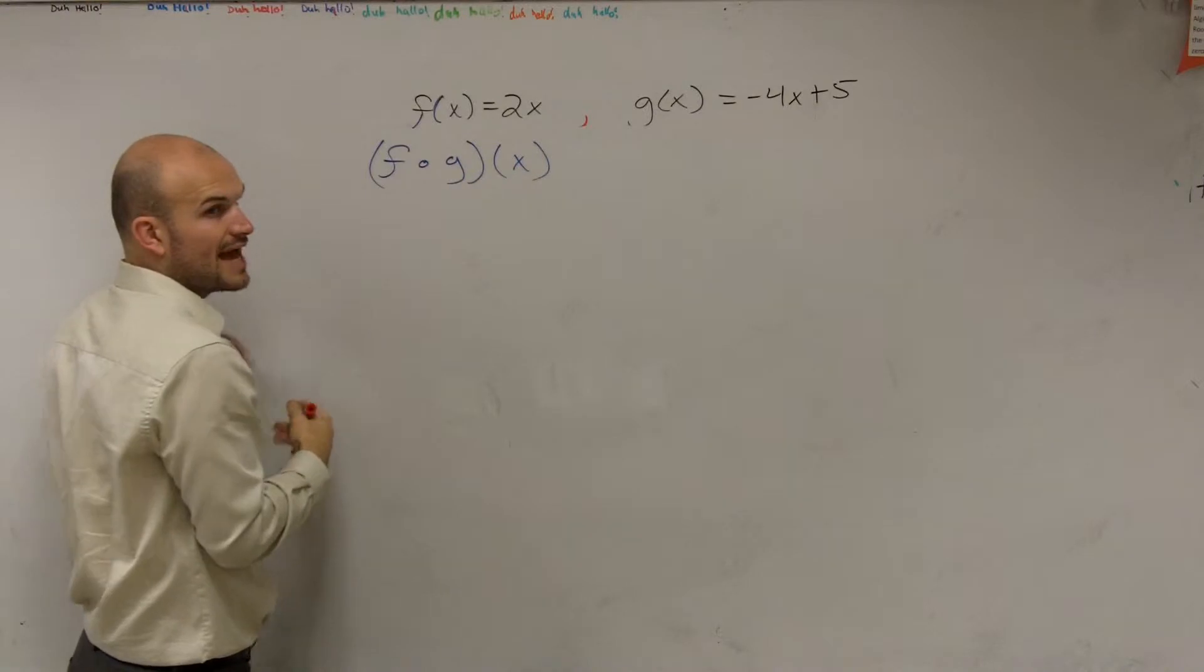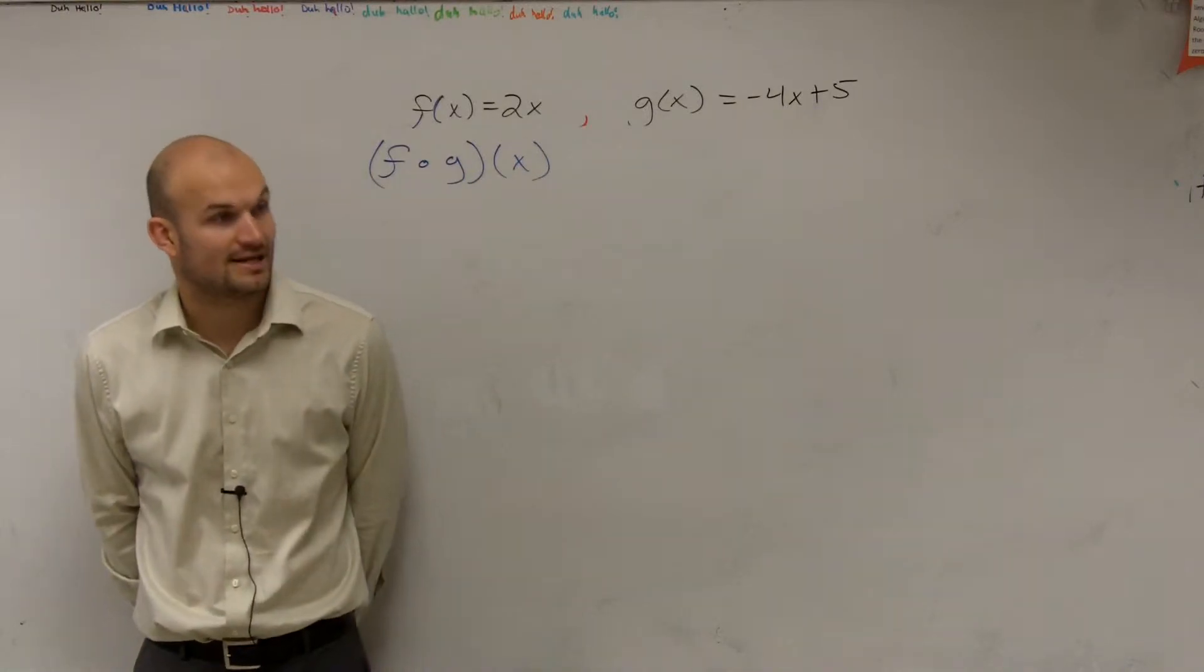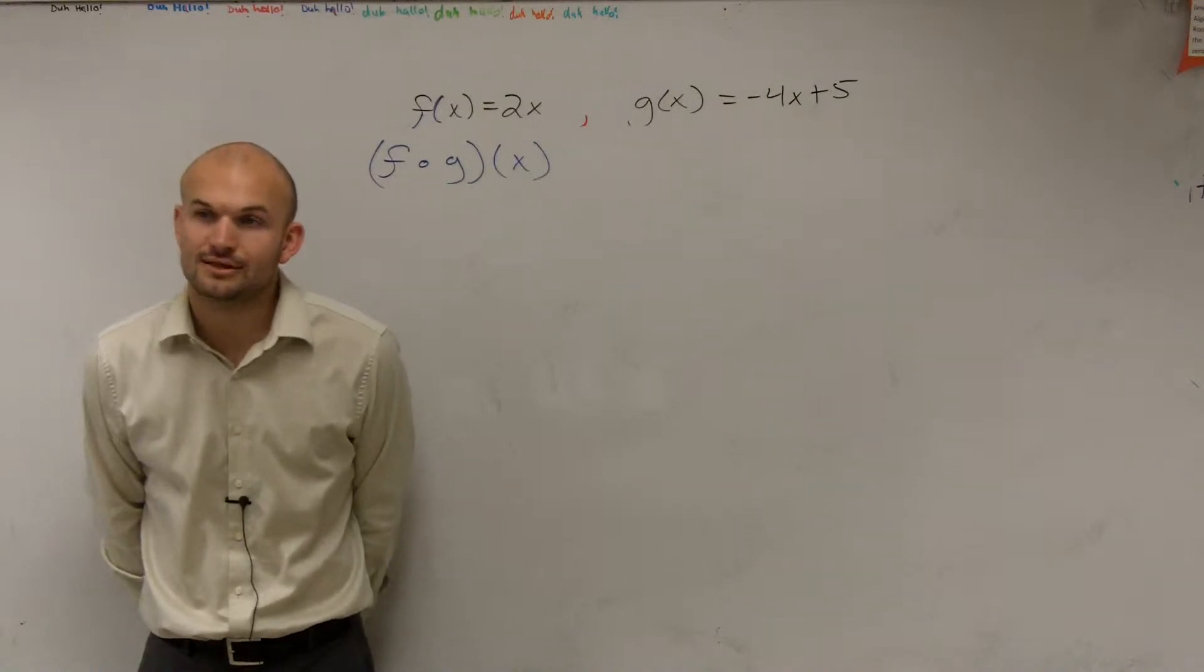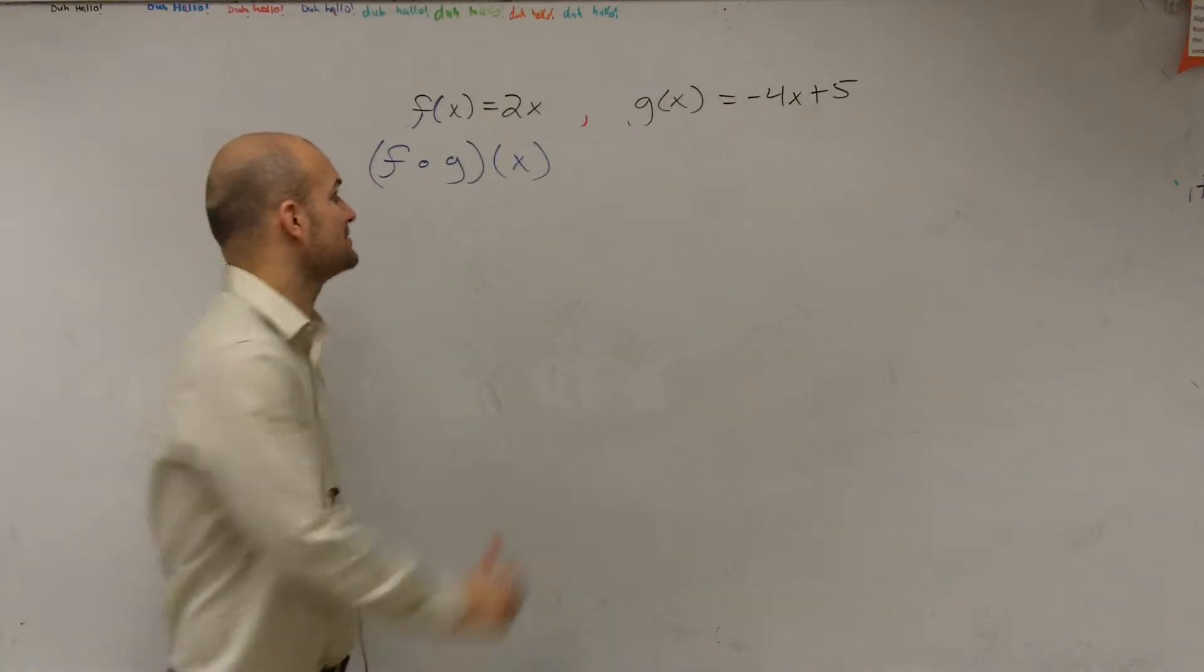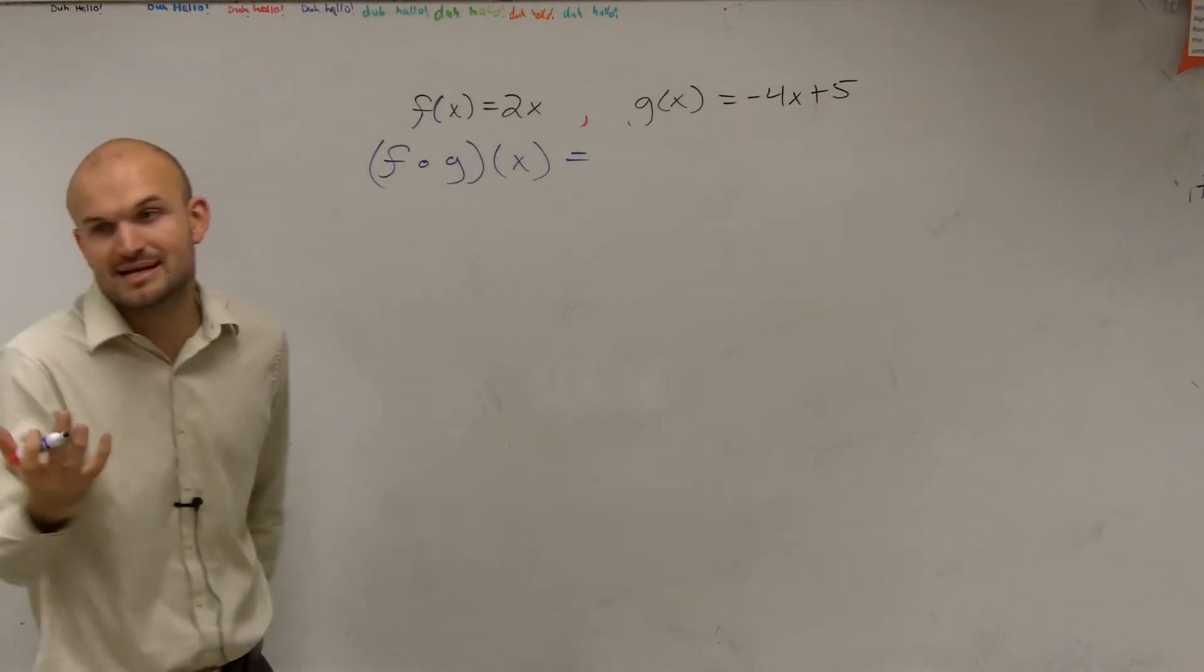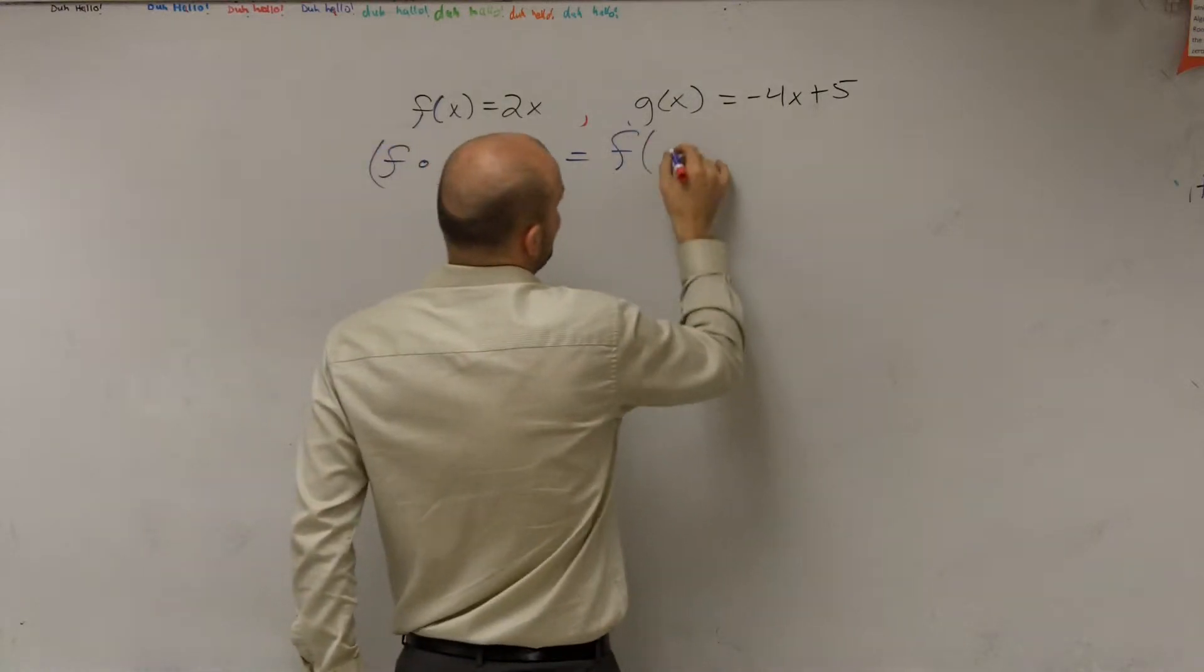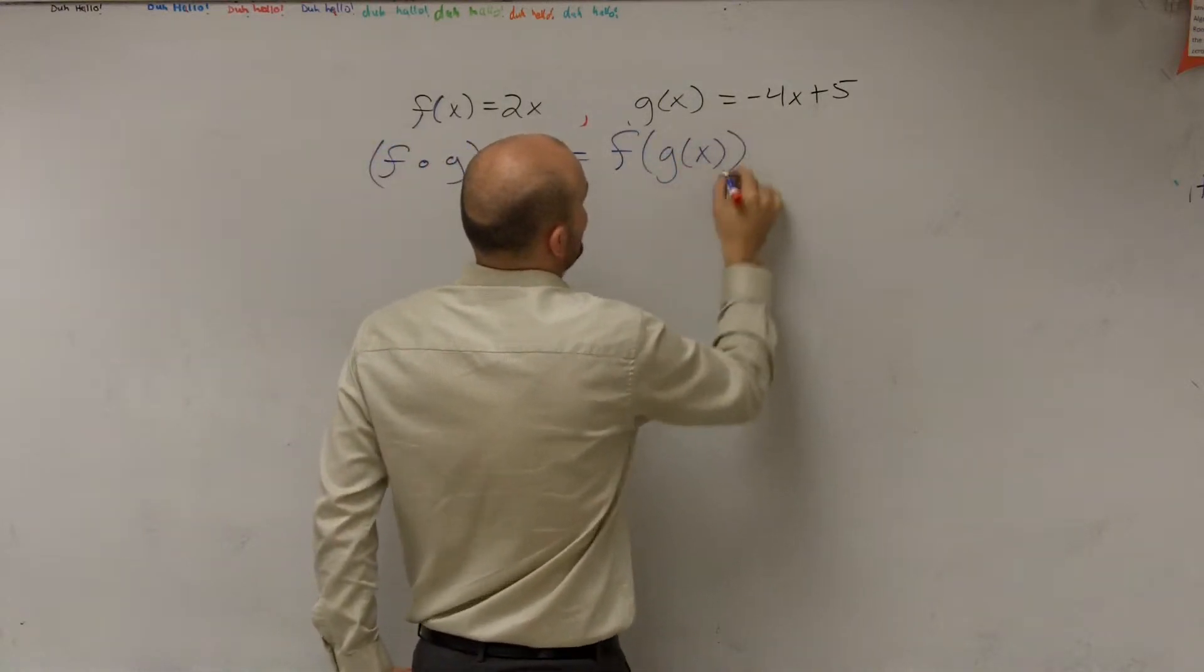It can look like this: f∘g, and what this says is f of g of x. A lot of times we just call it fog. That's not an O, that's a composition symbol. But sometimes, just to remember it, we say fog. And what it really means is f of g of x.